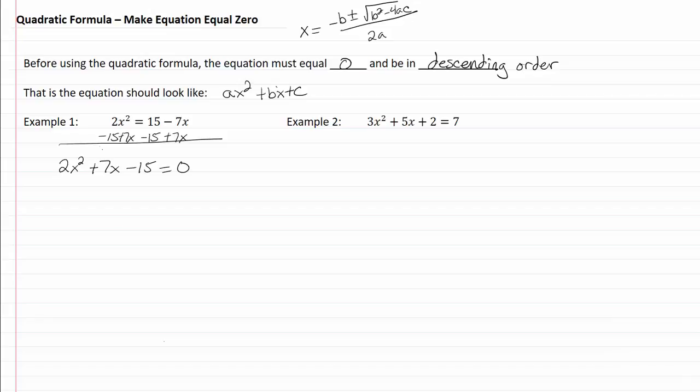Here's our a, our b, and our c. So x is going to equal negative 7 plus or minus the square root of 7 squared minus 4 times 2 times negative 15 all over 2 times 2.